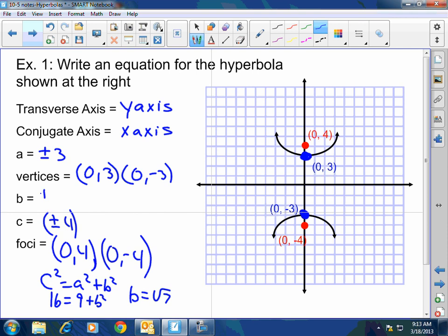So it's plus or minus square root of 7. Now, what is the b? The b is on the conjugate axis. So in this case, it's going to be (√7, 0), (-√7, 0).